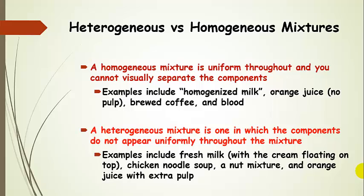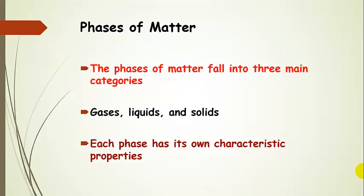A heterogeneous mixture is one in which the components do not appear uniform. For instance, if you take fresh milk — if you milk the cow and let it sit — you're going to have cream floating on the top, so that would be a heterogeneous mixture. Another heterogeneous mixture is chicken noodle soup: the broth, the noodles, pieces of chicken, perhaps some carrots. Another is a nut mixture — you can see the individual types of nuts. And orange juice with extra pulp is also a heterogeneous mixture.